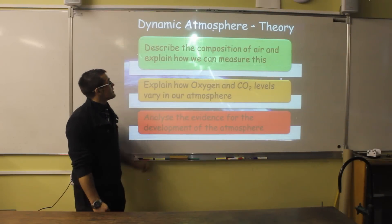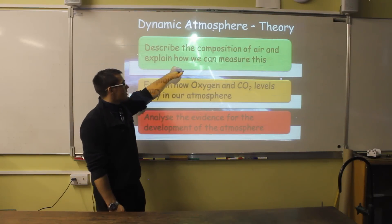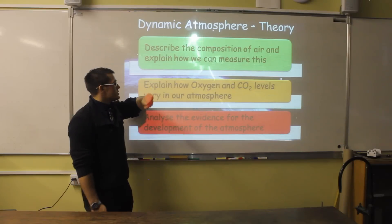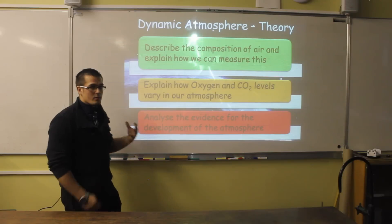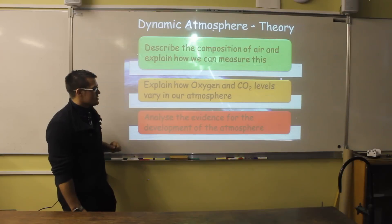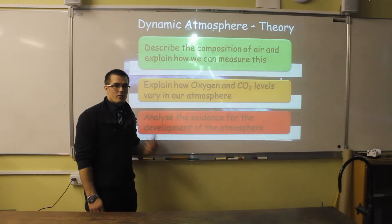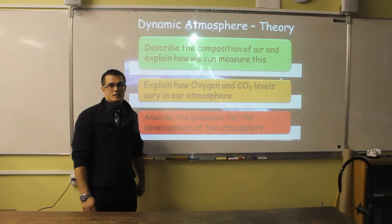This lesson is on the dynamic atmosphere. It starts with our first objective, which is to describe the composition of air and explain how we can measure this, to explain how oxygen and CO2 levels vary within our atmosphere and what causes this, and to analyze evidence for the development of the atmosphere, recalling the steps of how the Earth's atmosphere has developed since its beginning to the present day.